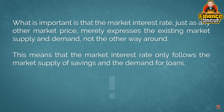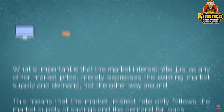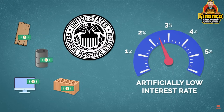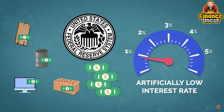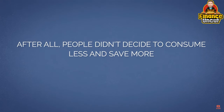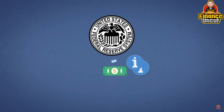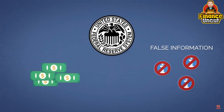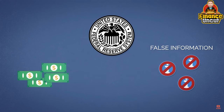The market interest rate only follows the market supply of savings and the demand for loans. When the central bank increases the money supply, it artificially lowers interest rates, but it does not immediately change the amount of saving on the market. There is a lot of new money to lend, but there are no new resources available to be bought for it. The demand for loans increases because they are now cheaper, but the supply of saved resources remains the same.